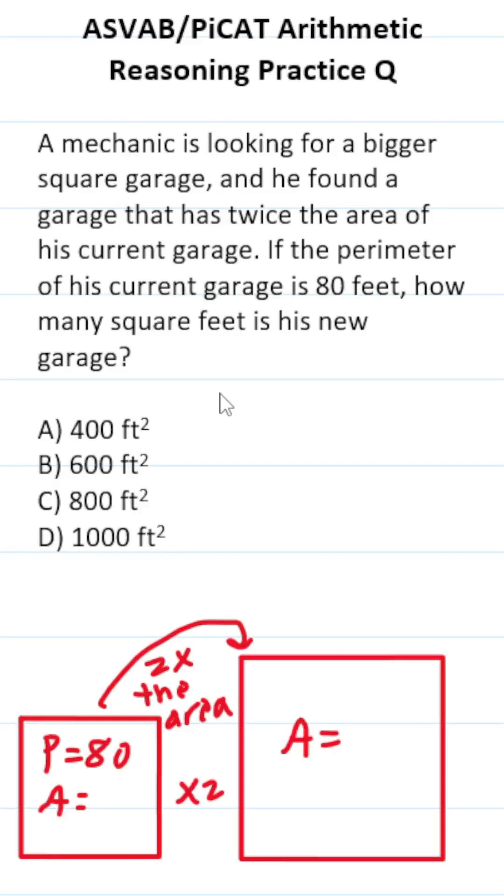This ASVAB PICAT arithmetic reasoning practice test question tells us that a mechanic has a garage in the shape of a square and currently has a perimeter of 80 feet. He's shopping for a new garage and he found one that has twice the area of his current garage. We want to know how many square feet that new garage is.